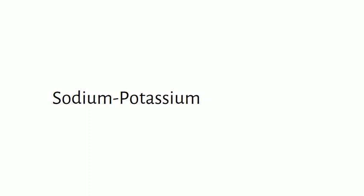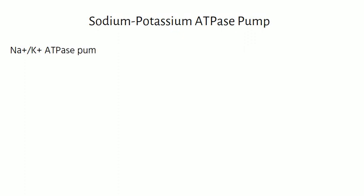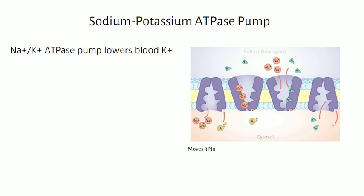Finally, potassium can be exchanged for sodium via the sodium-potassium ATPase pump. To avoid an increase in extracellular potassium levels, excess potassium is temporarily shifted into red blood cells and other cells such as those of the muscle, liver, and bone. This is controlled by the sodium-potassium ATPase membrane pump and the permeability of ion channels in the cell membrane. Thus, the sodium-potassium ATPase pump lowers blood potassium.